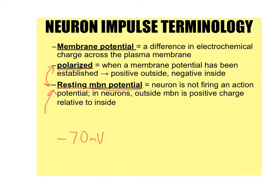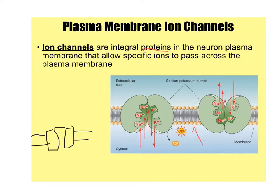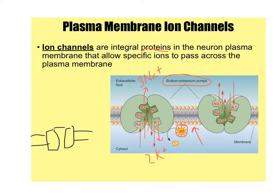Ion channels are proteins embedded within the cell membrane — the membrane of the neuron, around the axon, dendrites, cell body, or axon hillock. The sodium-potassium pumps are not like doors; they require ATP energy. They pump out three Na+ ions outside the neuron and pump in two K+ ions. Three is more than two, so outside it's positively charged and inside it's negatively charged — the resting membrane potential of about negative 70 millivolts.